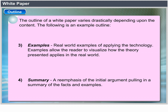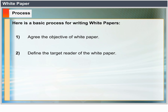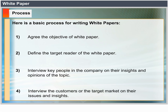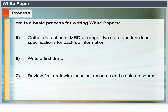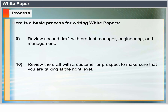Process — here is a basic process for writing white papers: 1. Agree on the objective of the white paper. 2. Define the target reader. 3. Interview key people in the company on insights and opinions of the topic. 4. Interview customers or the target market on their issues and insights. 5. Gather data sheets, MRDs, competitive data and functional specifications for backup information. 6. Write a first draft; review it with a technical resource and a sales resource. 7. Write a second draft; review it with the product manager, engineering and management. 8. Review the draft with a customer or prospect to make sure you are talking at the right level. 9. Write and review the final draft.